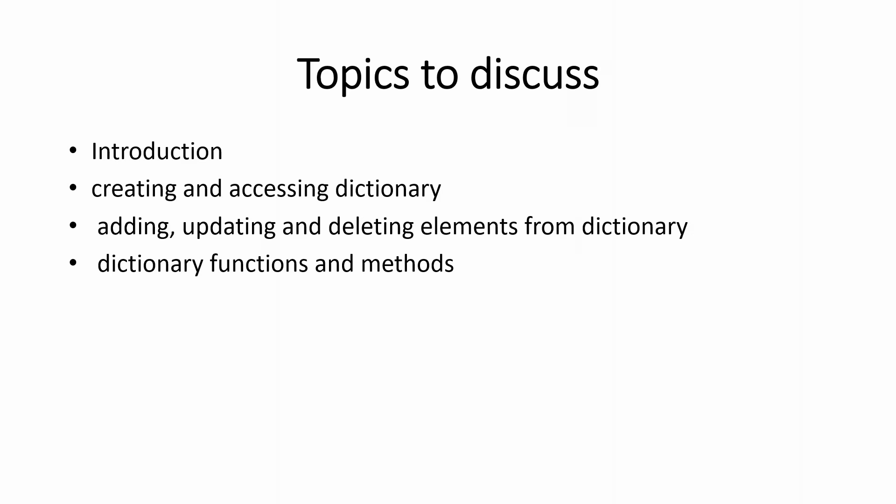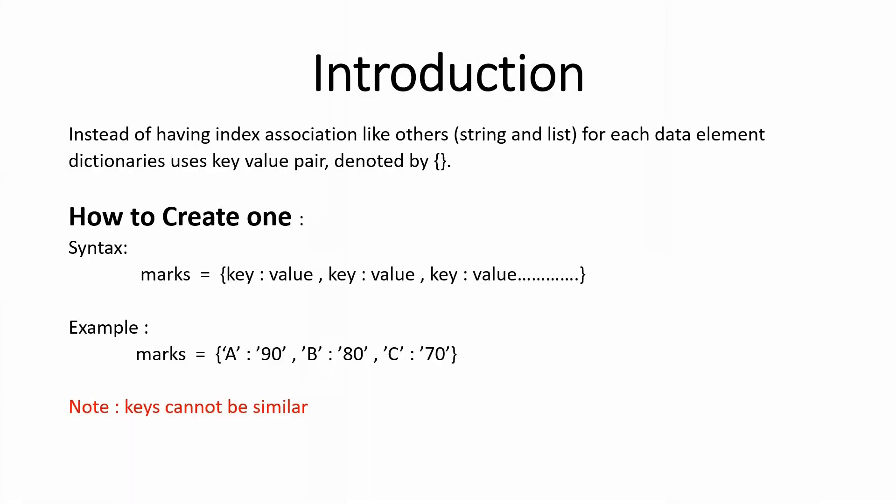Let's start with a general introduction of what a dictionary is. A dictionary is another collection data type of Python, just like string and list, which stores a sequence of values. But it is a little bit different: if you want to access a specific element in a string or a list, you provide the index or position of that element.